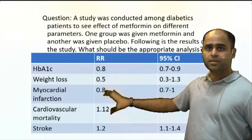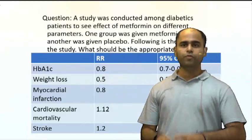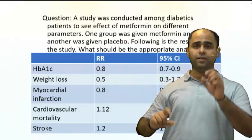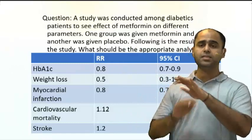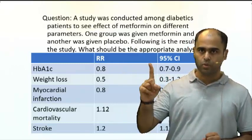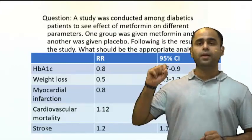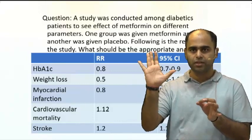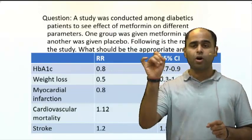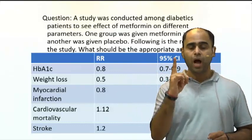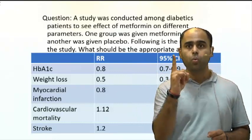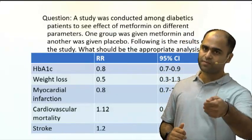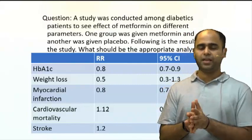Whenever you look at confidence intervals, three rules are important. First: if the CI touches the null value, it is insignificant. What is the null value? No association. In relative risk and odds ratio, no association is at RR and OR equal to one. More than one means risk factor; less than one means protective factor.